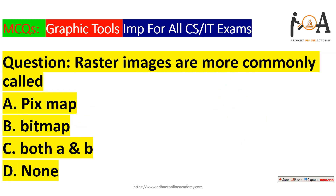The next question is: raster images are more commonly called as? Raster images are more commonly called as bitmap. This is a basic question of computer graphics — raster images are called bitmap because they are made up of pixels.